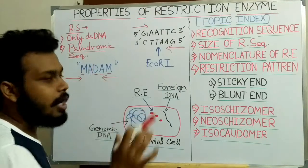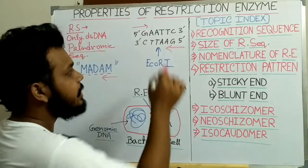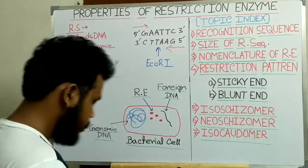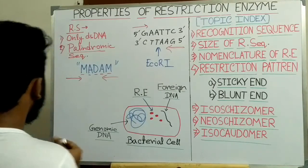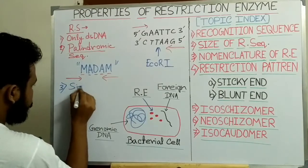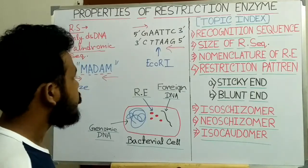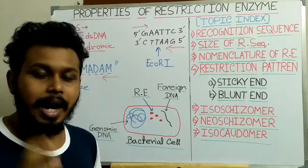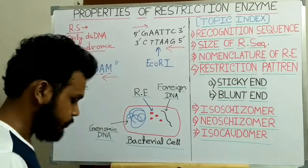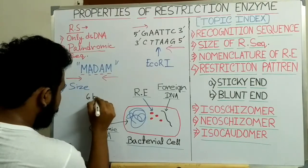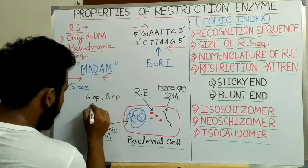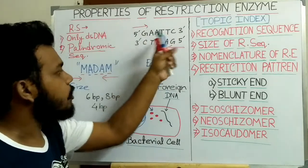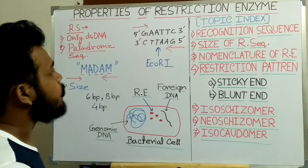Now the third and last property of this recognition sequence is the size of the recognition sequence, that means how many nucleotides are present in one recognition sequence. The third point is the size of the recognition sequence. This recognition sequence can be made up of 6 base pairs, or 8 base pairs, or sometimes 4 base pairs. Here the recognition sequence for EcoR1 is a 6 base pair sequence. So these are all the properties of the recognition sequence.